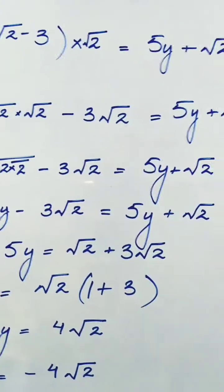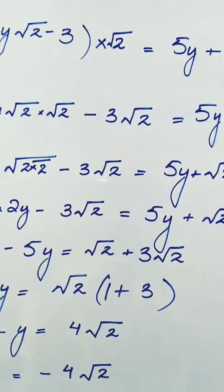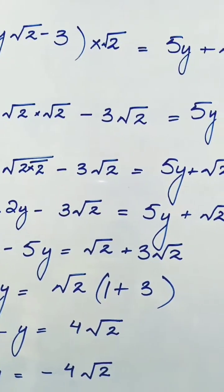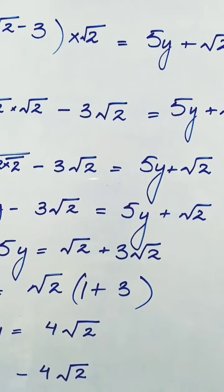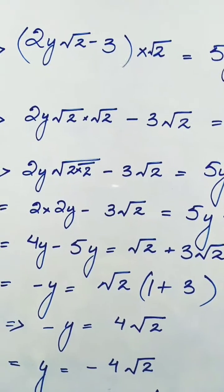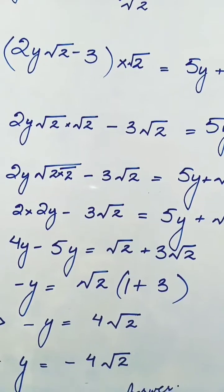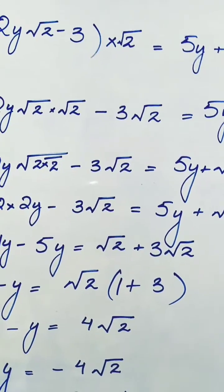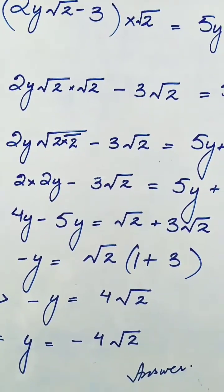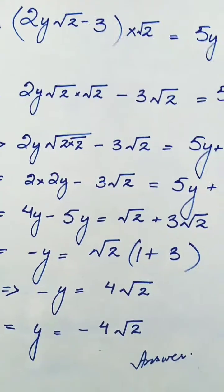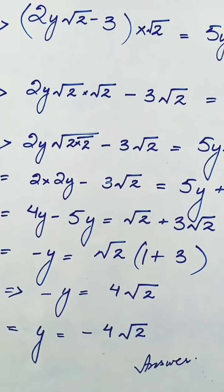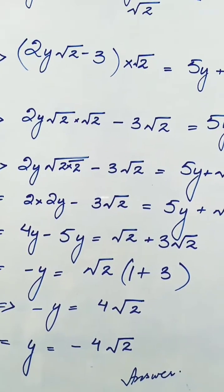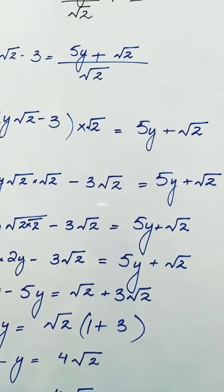We take both root 2s under one root and they come out as a pair. So we have 2 × 2y minus 3√2 equals 5y plus √2, which is 4y minus 3√2 equals 5y plus √2. Taking y terms to the left and number terms to the right: 4y minus 5y equals √2 plus 3√2, giving us minus y equals 4√2. Multiplying both sides by minus 1, y equals minus 4√2. Here n equals minus 4, and y equals minus 4√2 is the required form.